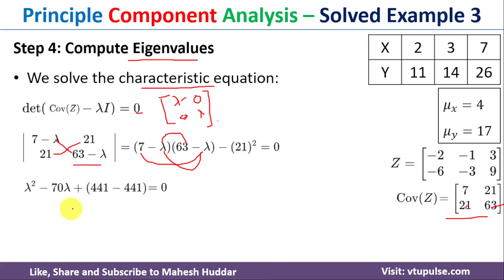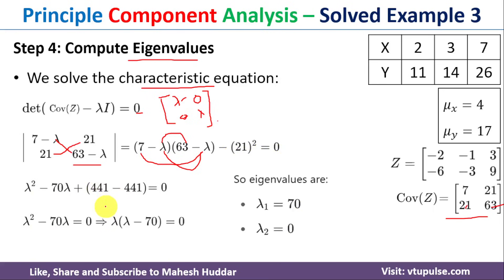Solving this equation gives two eigenvalues: λ₁ = 70 and λ₂ = 0. λ₁ = 70 is the first eigenvalue and λ₂ = 0 is the second eigenvalue.